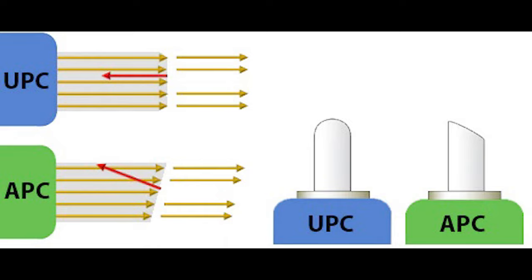UPC connectors are not exactly flat; they do have a slight curvature for better core alignment. Some applications are more sensitive to return loss, and that's where APC connectors shine — for instance, in higher wavelength ranges like those used for RF video signals. For other applications where return loss is not paid much attention to, UPC comes into play.